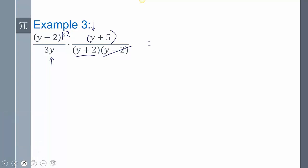And so we're going to get y minus 2 squared times y plus 5. And then I guess we have 3y times y plus 2. That's just our answer. The only one of those y minus 2s reduced.